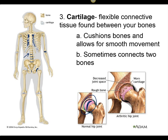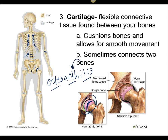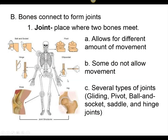As we get older, the more this cartilage rubs away, the more we have bone-to-bone contact. That's when we have osteoarthritis — osteo refers to bones, arth refers to joint, itis refers to inflammation. So osteoarthritis is inflammation of the joints due to the rubbing of our bones.